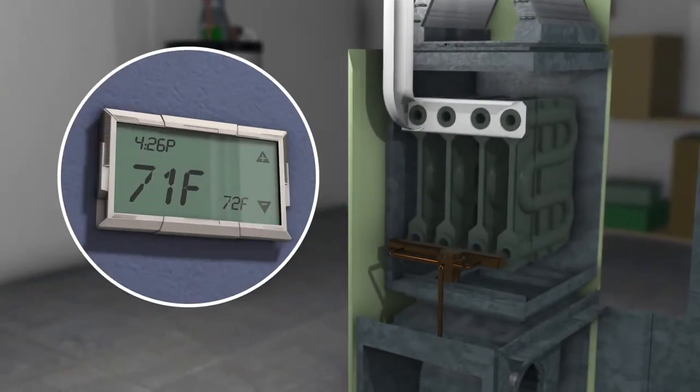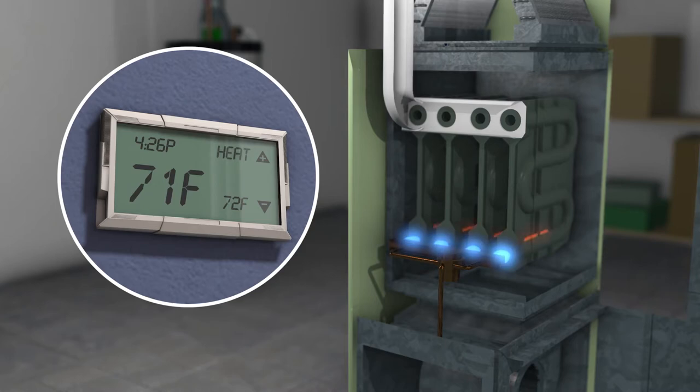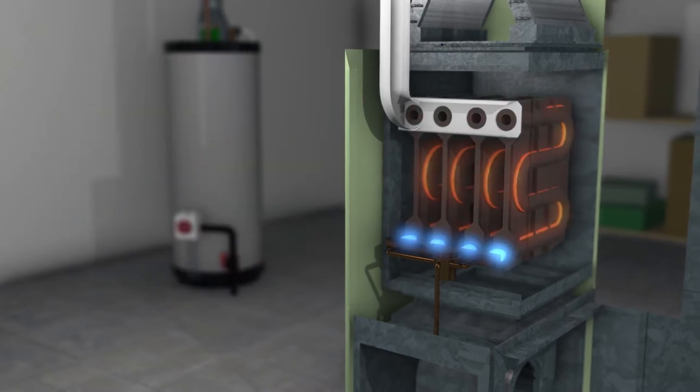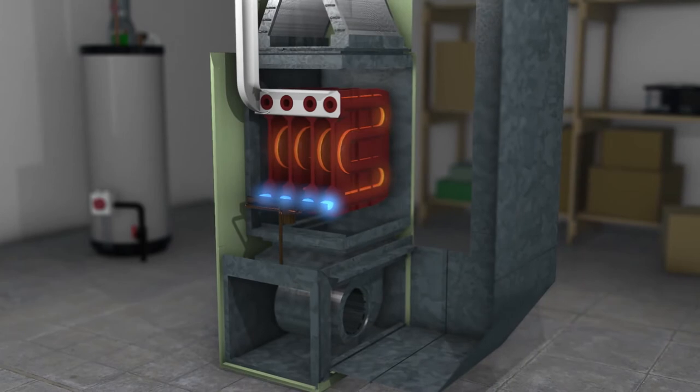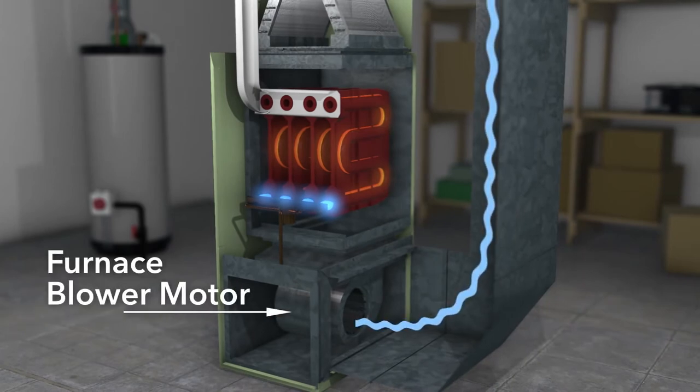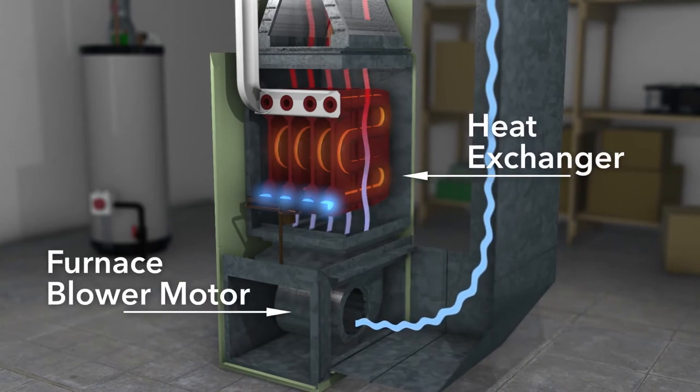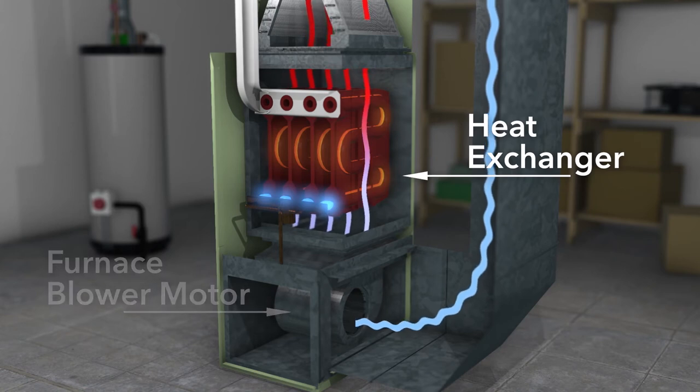When the thermostat signals the furnace to start, fuel is sent to the burners. Flames reaching temperatures of over 3,000 degrees heat up the heat exchanger. Next, the furnace blower motor sends air past the heat exchanger where it's heated and delivered throughout your home.